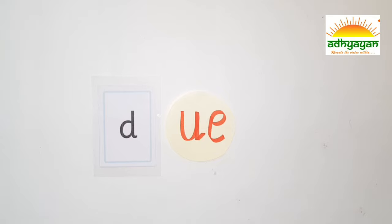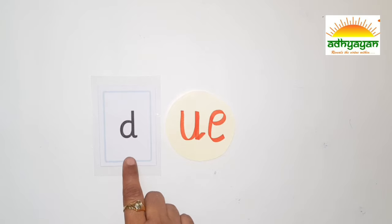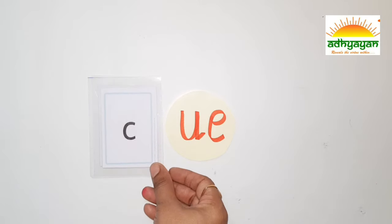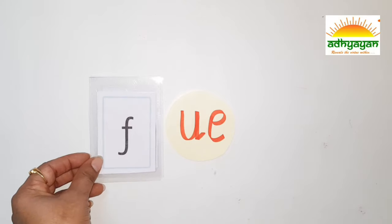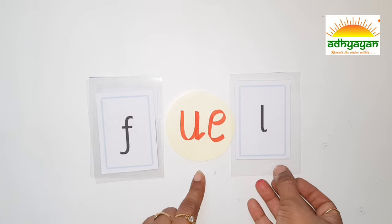Next long vowel is U — UE says U. And the words are D-O — Do. And F-U-E-L — Fuel.